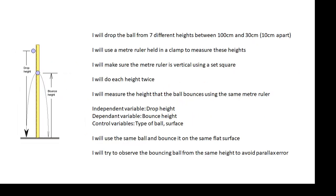Here's an example of a method. I will drop the ball from seven different heights between 100 centimeters and 30 centimeters, 10 centimeters apart. So I've said what the range is. I've said what the interval is. I've said how many readings I'm going to take. I will use a meter ruler held in a clamp to measure these heights. I will make sure the meter ruler is vertical using a set square. I will do each height twice. I will measure the height that the ball bounces using the same meter ruler. My independent variable is the drop height. Dependent variable is the bounce height. Control variable is the type of ball. The surface. I'll use the same ball and bounce it on the same flat surface. I will try to observe the bouncing ball from the same height to avoid parallax error. If you don't know what that is, look it up.